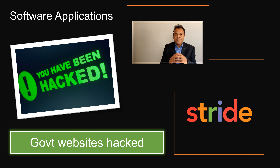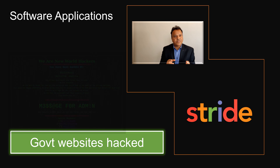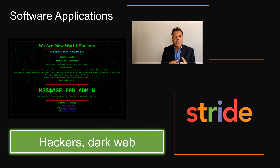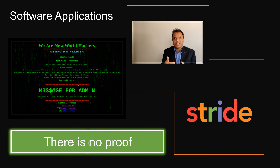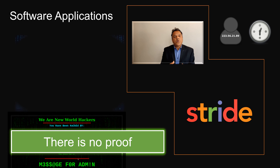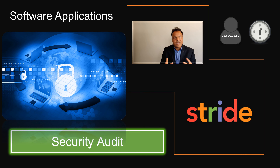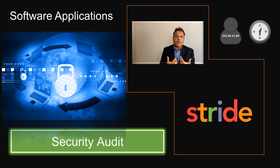In software applications, repudiation occurs when people hack websites — government sites or major sites like Microsoft.com have been hacked — and attackers even claim it on the dark web, but there is no evidence to prove it because the system may not be logging the attacker's IP address, MAC address, timestamp, time zone, or origin. Performing a proper security audit can prevent these attacks. Repudiation in software is fundamentally about storing and collecting the required audit data for security.